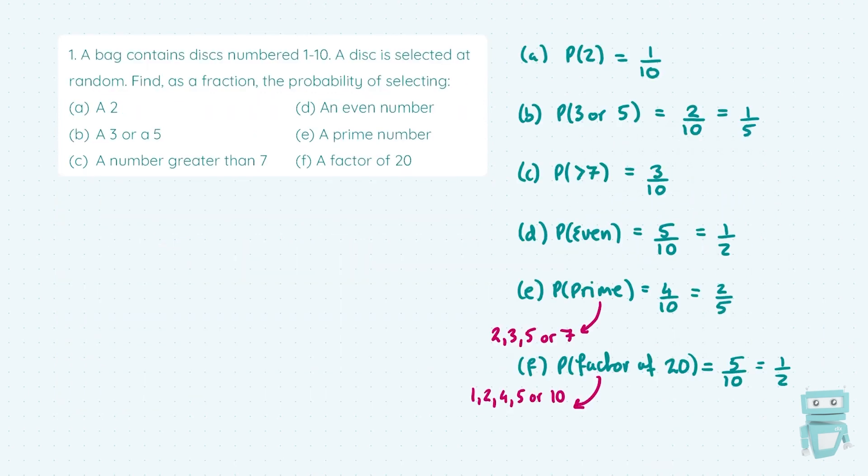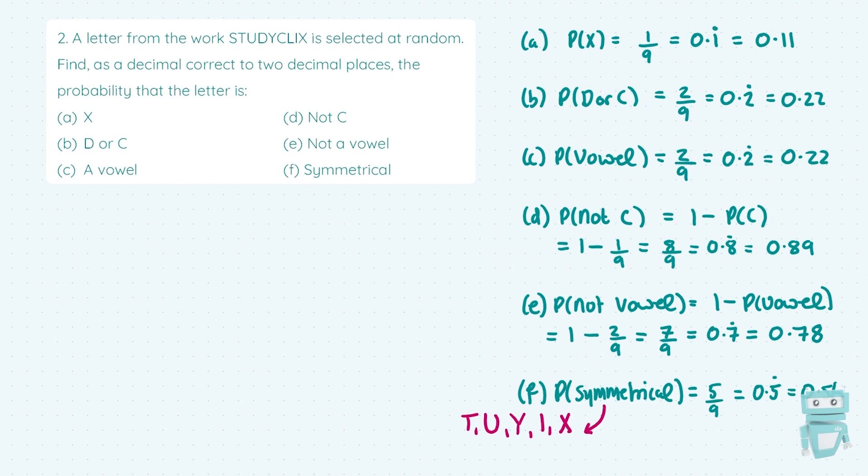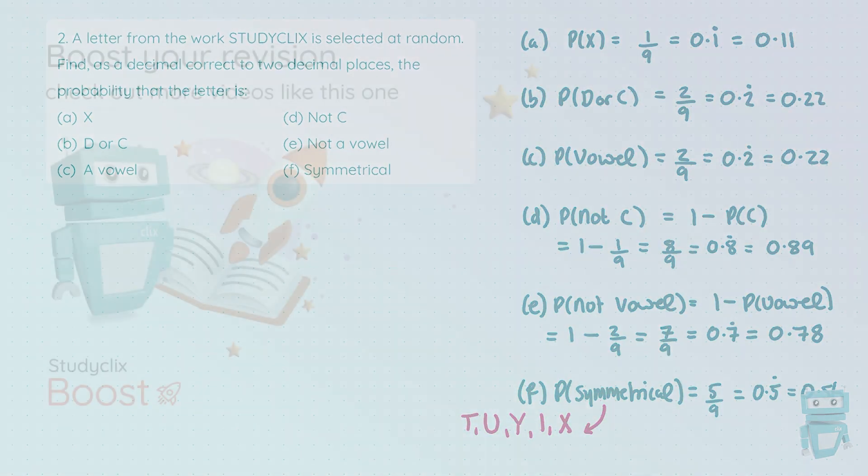Here in question 1, you can see our solutions are given as fractions. Make sure you simplify your fractions. And in question 2, we're being very careful with our rounding to two decimal places. Make sure you're expanding out those recurring decimals. In part F, the symmetrical letter is a letter that can be chopped in half, which gives a perfectly even reflection each side of the line of symmetry. Thanks for watching.